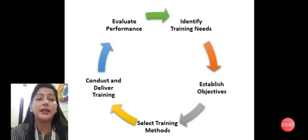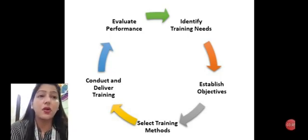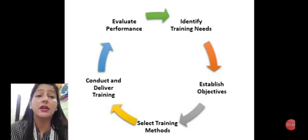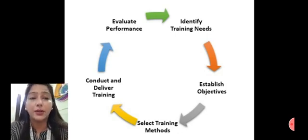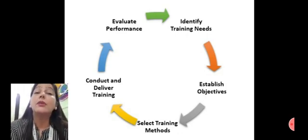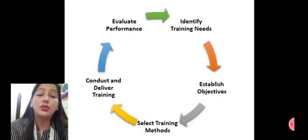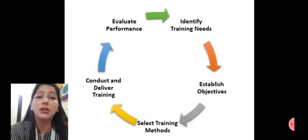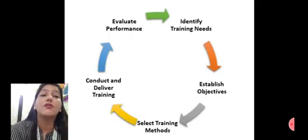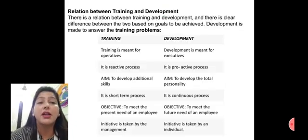First, we identify our training needs. Then we establish our objectives — how we need to fulfill those needs. Next, we select our method: on-the-job or off-the-job. We select which method to adopt. Then we conduct the training program and deliver training to the sessions. After that, we evaluate our performance and how much we have gained. This is our training planning process.